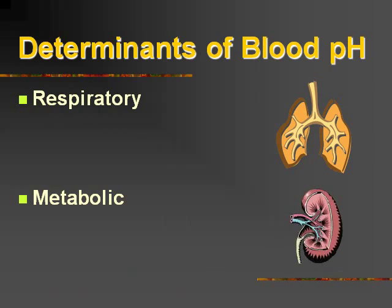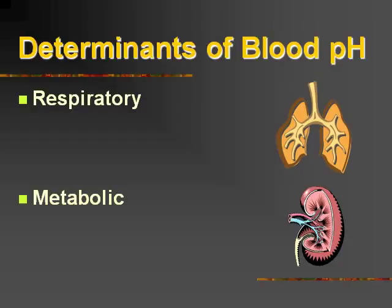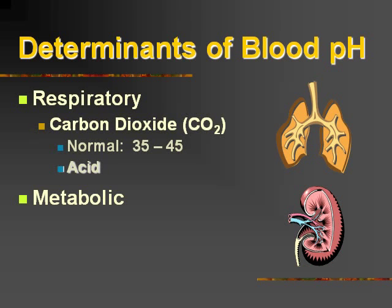What are the determinants of blood pH? We have the respiratory system and the metabolic system. The respiratory system tends to make changes very quickly by increasing or decreasing our respiratory rate, and metabolic has to deal with the kidneys, which is a slower process. When you think respiratory, think carbon dioxide. The normal CO2 on the ABG is 35 to 45 — think acid.